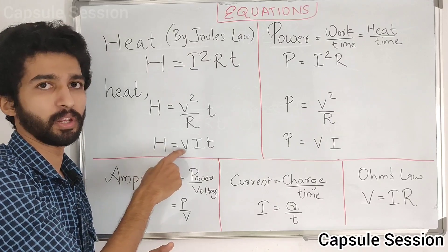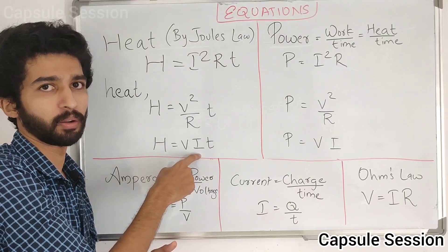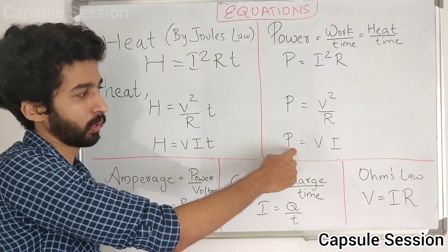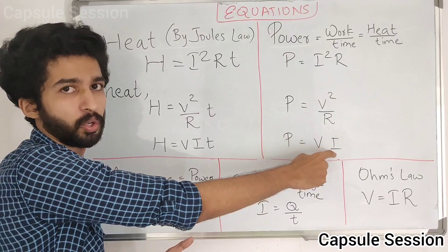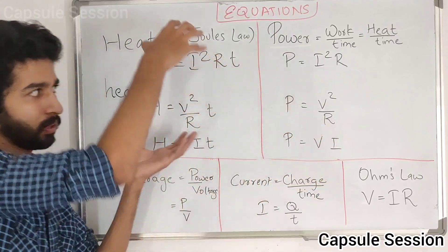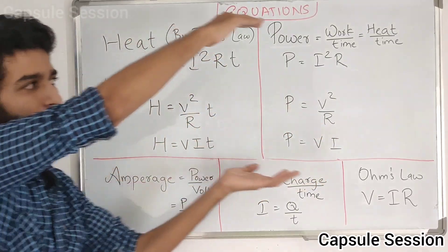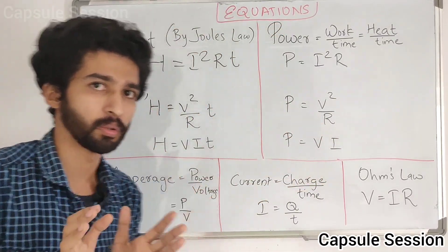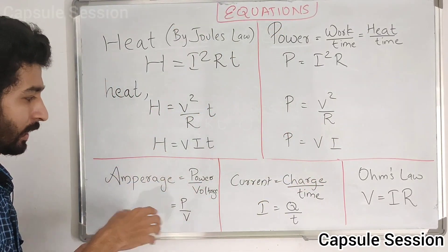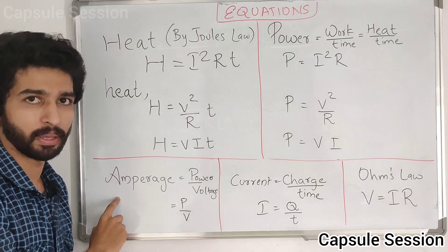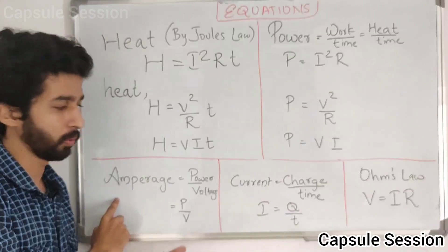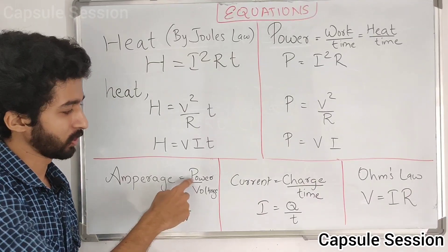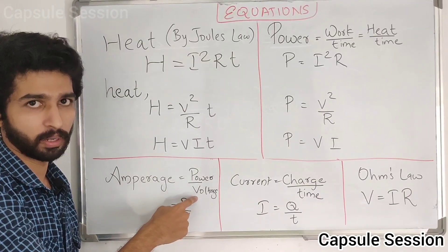When we get H equal to V times I times T, then power P is equal to V times I. We have a term that is called amperage. The equation for amperage is power by voltage — we use P divided by V.